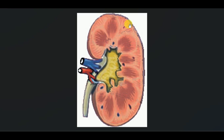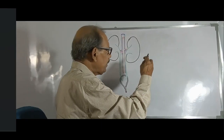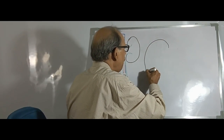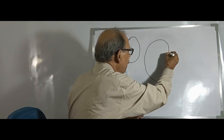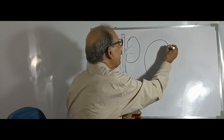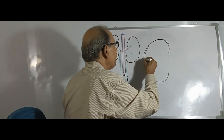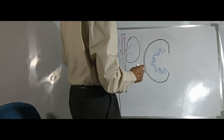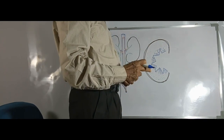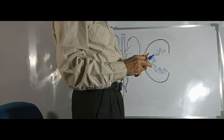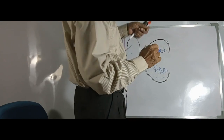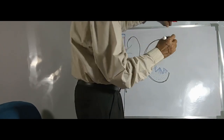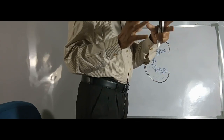The cortex and the medulla are demarcated by their colors. The outer zone is pale and the inner zone is a little bit darker in appearance. The cortex is the area where the main units of the kidneys — the nephrons — are situated. The nephron is composed of a number of tubules along with the Malpighian corpuscle.